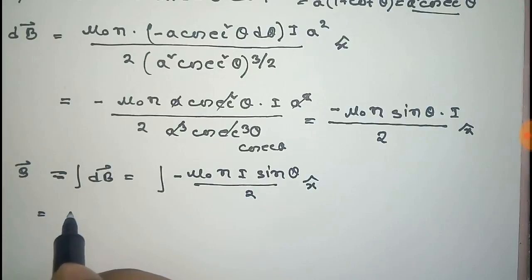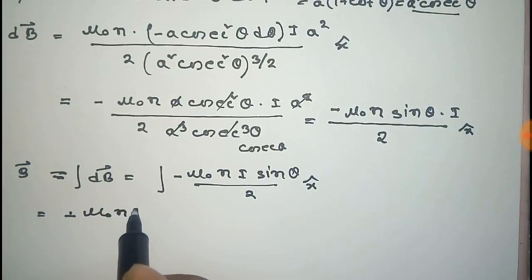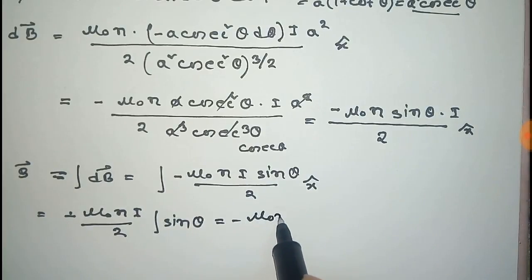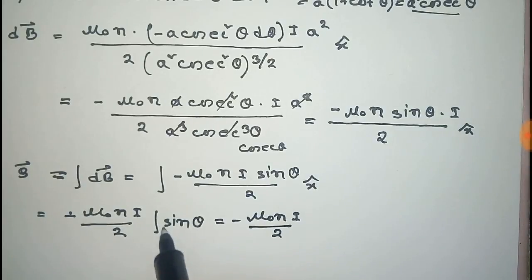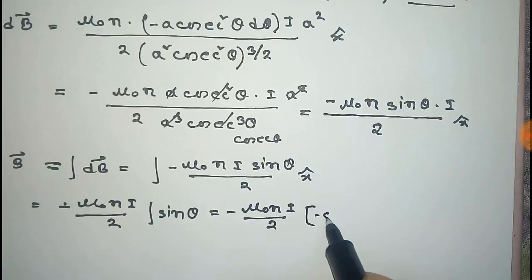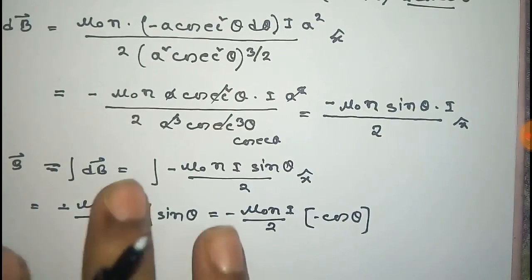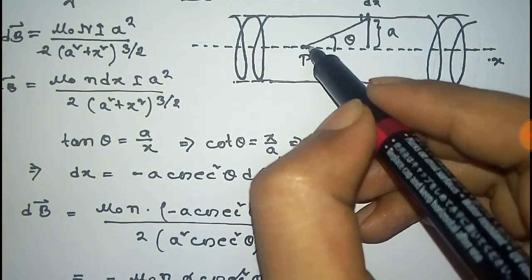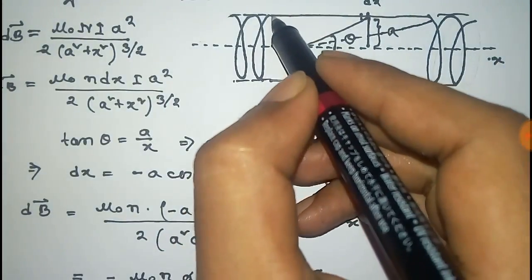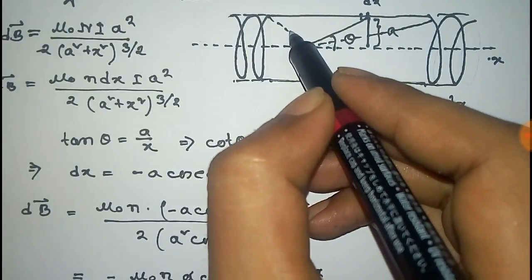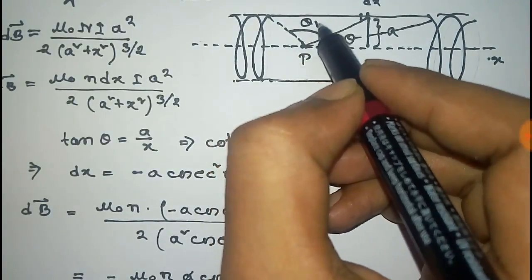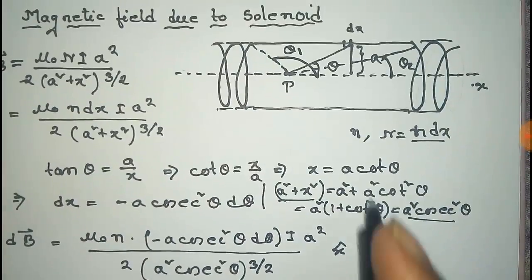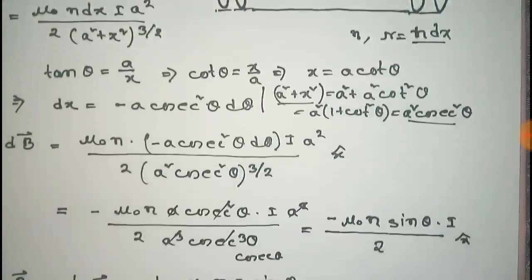That equals minus μ₀nI/2 times the integral of sinθ dθ, which equals μ₀nI/2 times minus cosθ. Now we have to put the limits of this integral. We extend the cylinder from angle θ₁ to θ₂, so the limit is from θ₁ to θ₂.